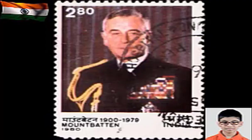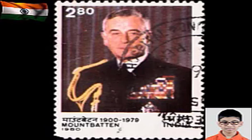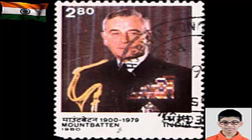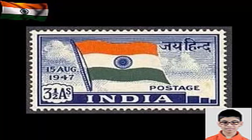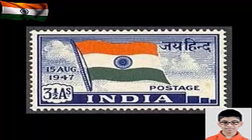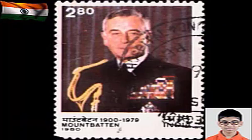On 3rd June 1947, Viscount Louis Mountbatten, the last British Governor General of India, announced the partitioning of British India into India and Pakistan. With the speedy passage of the Indian Independence Act 1947, at 11:57pm on 14th August 1947, Pakistan was declared a separate nation. And then at 12:02am on 15th August 1947, India became a sovereign democratic nation. Eventually, 15th August became Independence Day for India, marking the end of British rule. Sardar Vallabhbhai Patel invited Lord Mountbatten to continue as Governor General of India during the period of transition.